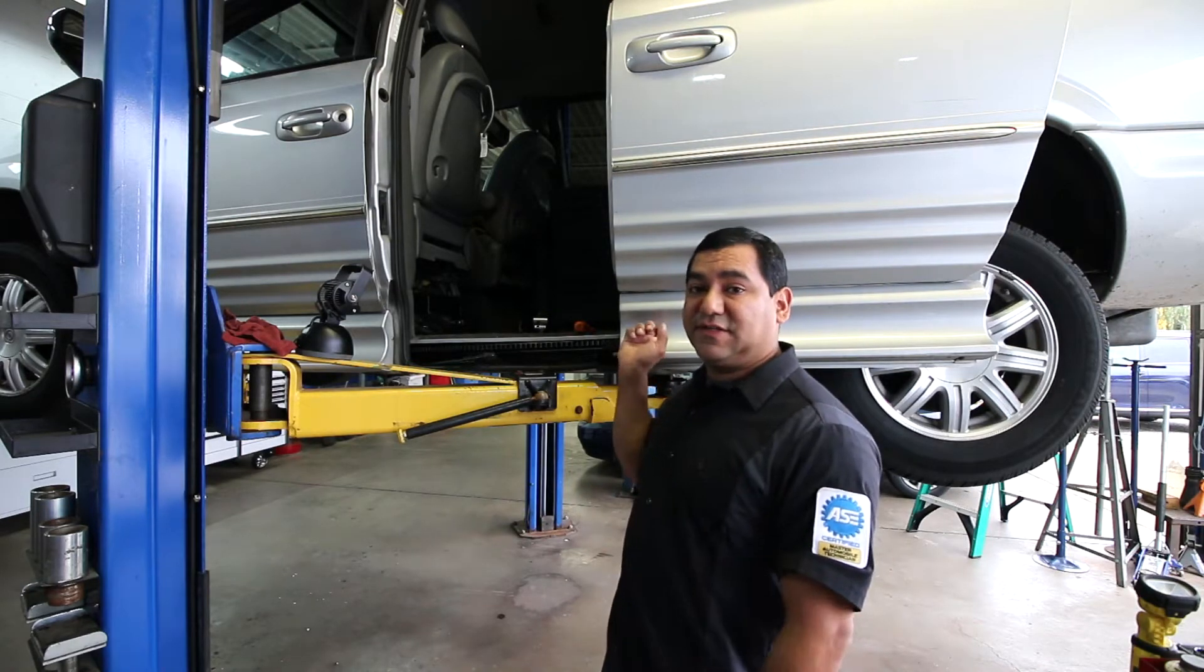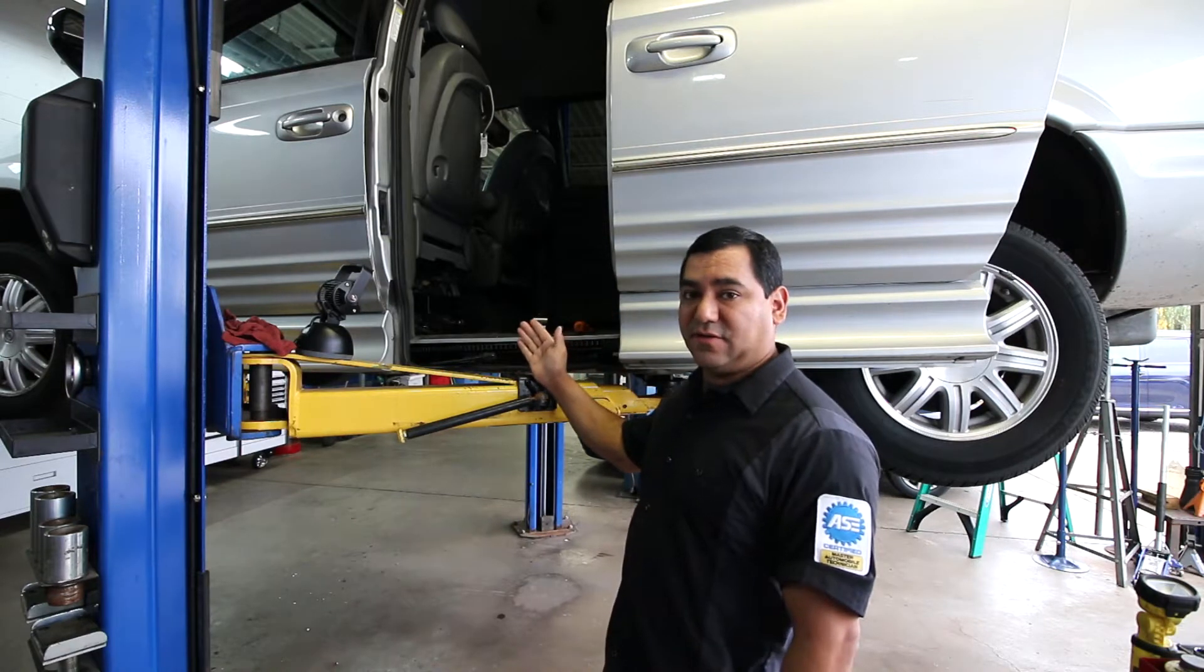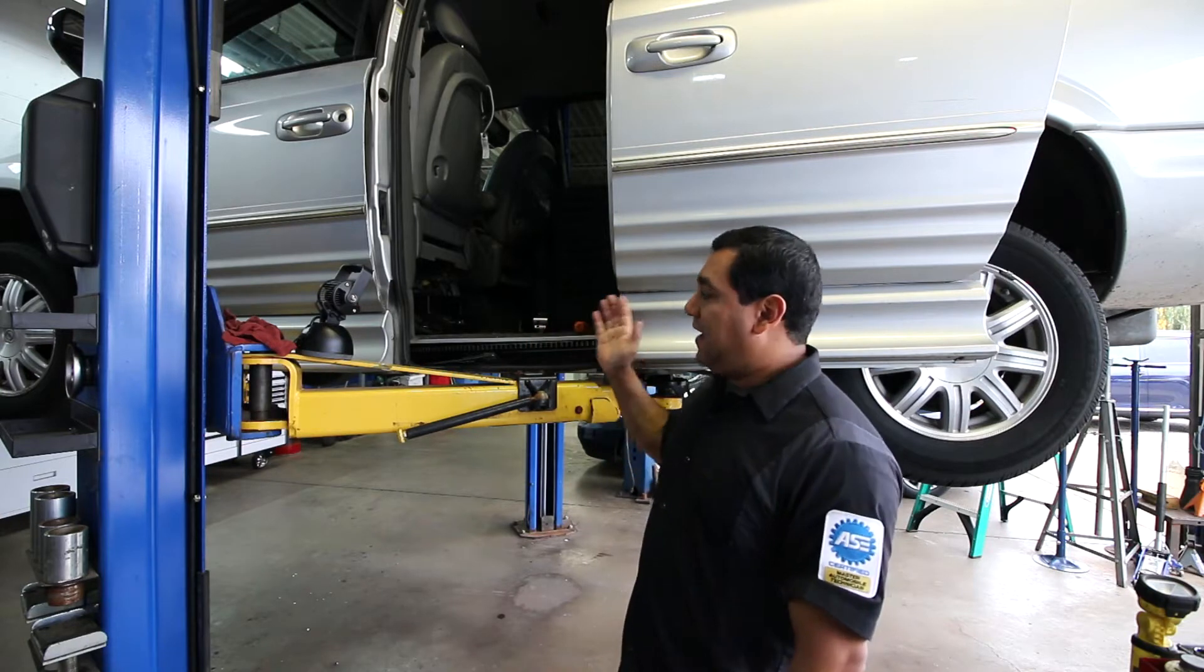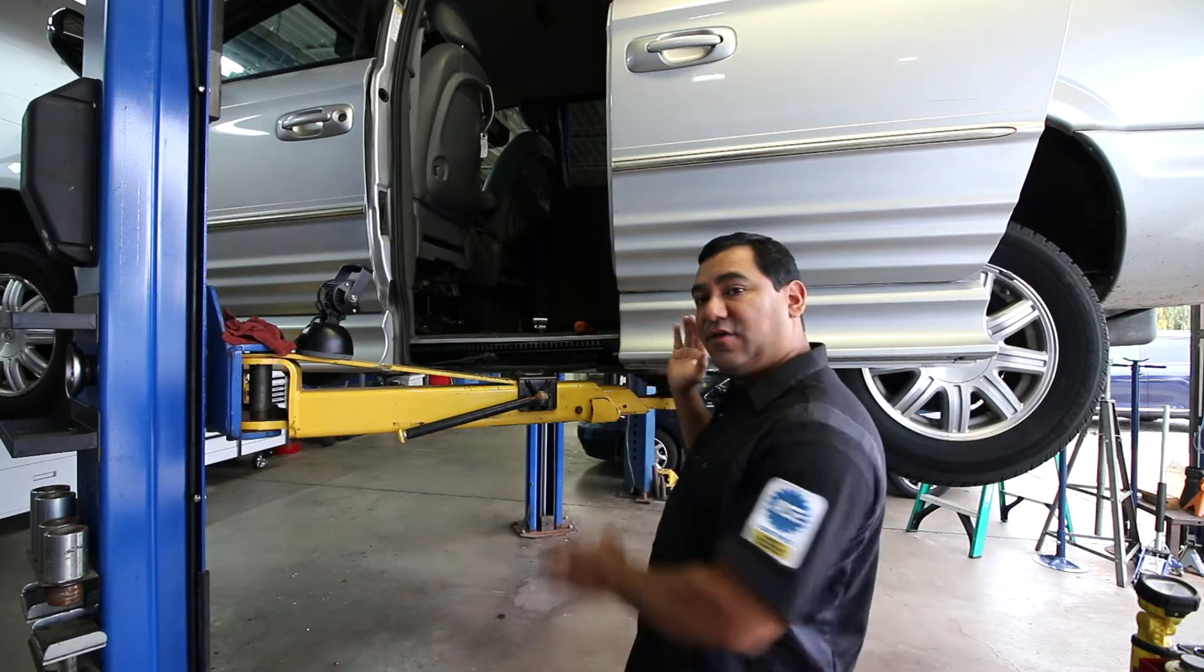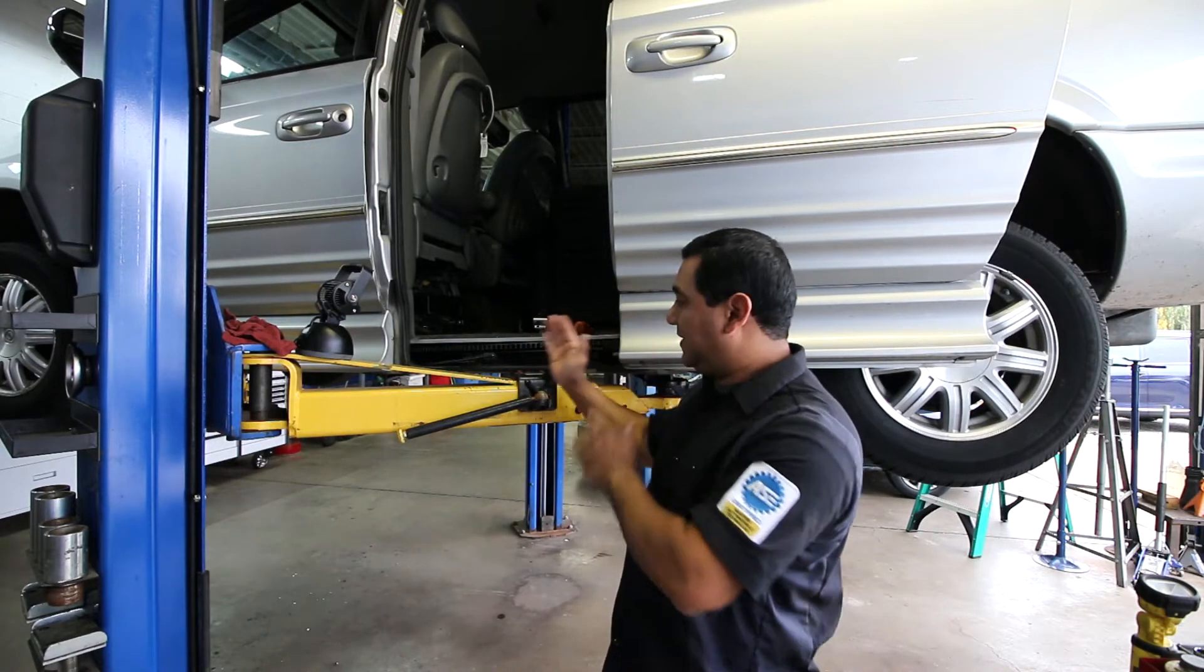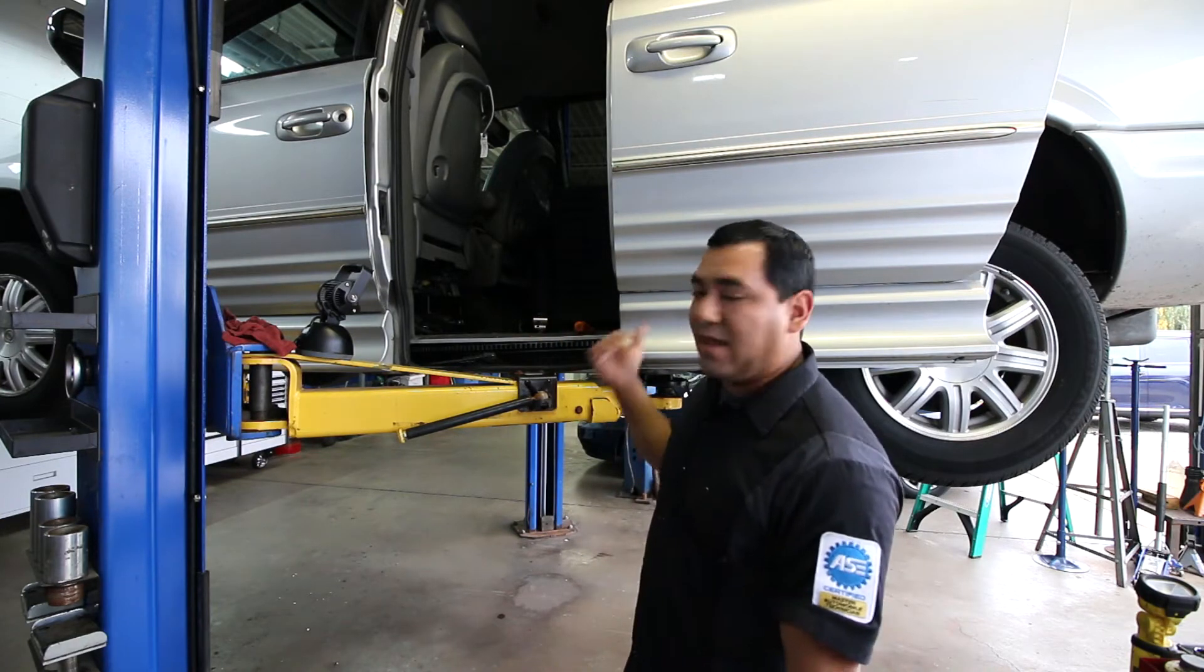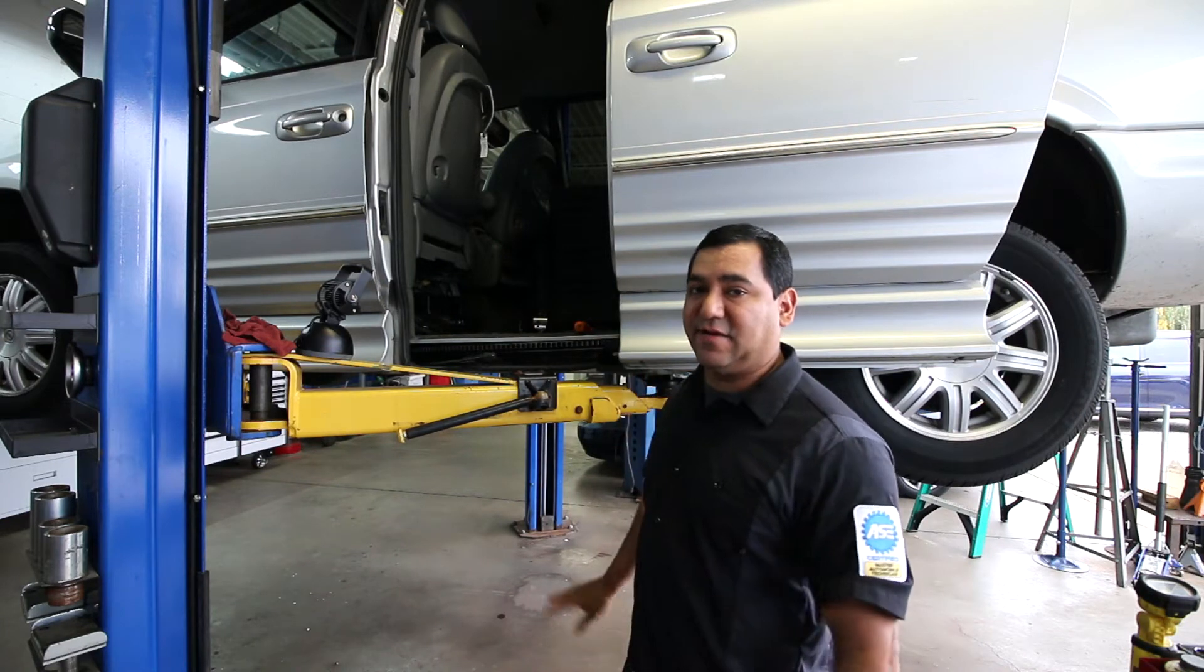Say you have one of these Chrysler vehicles, this is a 2004, and you activate or try to open or close the sliding doors using a button and it'll stop midway, either opening or closing. You can shut the door or open it and it'll work again until it hits somewhere midway and then it just stops, it just goes dead.